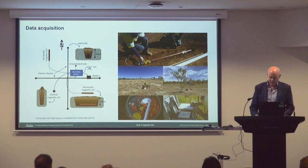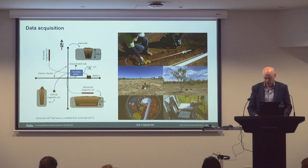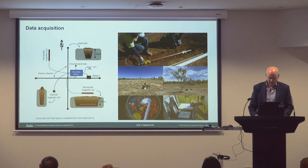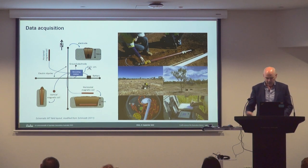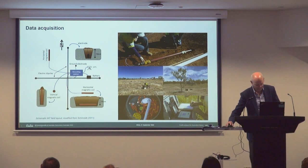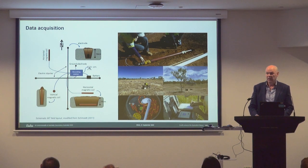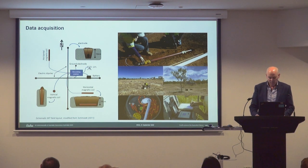The setup is similar for long-period acquisition, except that three smaller magnetic flux gate sensors are all housed in a single plastic cylinder about the size of a large jar. A long-period installation would typically run for four to six weeks, so it also includes a solar panel to recharge the battery, and cables are usually buried to protect them from inquisitive animals.